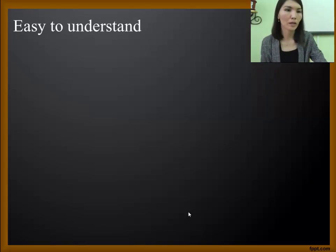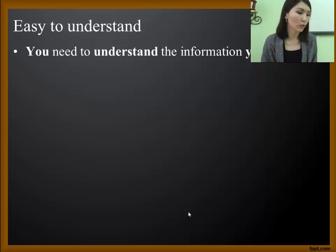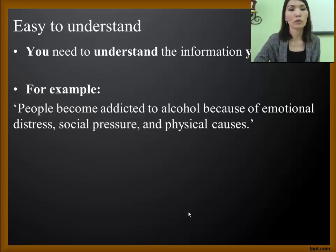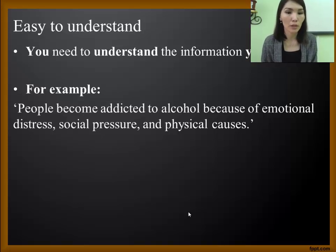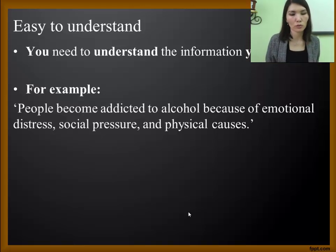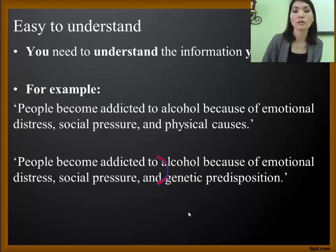Talking about how it should be understandable for you — first of all, it is you who need to understand. If you don't understand what you are writing about, it's not going to be an effective paper. For example, a student wrote: 'people become addicted to alcohol because of emotional distress, social pressure, and physical causes.' However, later the student might not be so good at chemistry, so the student decided to change the last point — not to write about the chemical reactions that happen as a result of alcohol — and instead changed it to genetic predispositions.